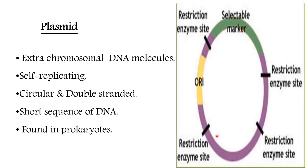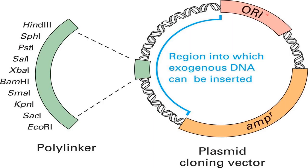Plasmids are extra-chromosomal DNA molecules which are self-replicating, double-stranded circular short sequences of DNA found in prokaryotes. A plasmid consists of an origin of replication site, an ampicillin resistance site which is a selectable marker, and a region into which exogenous DNA can be inserted. These are called polylinkers, which consist of restriction endonuclease sites into which the DNA of interest can be inserted.